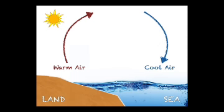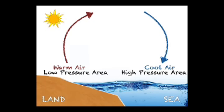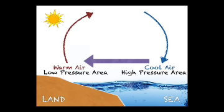Now, what is sea breeze? Land absorbs heat faster than the sea. During the daytime, the land heats up more quickly than the seawater. Thus, the air above the land surface being heated becomes less dense, expands and forms a low pressure area, and ultimately rises up. The cooler air above the sea surface is more dense and forms a high pressure area. So, this cooler air blows towards the land to take its place. This set of convection currents — the cool air from the sea blowing towards the land — is called the sea breeze.